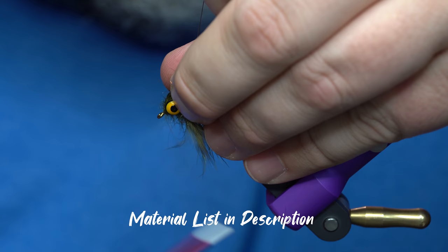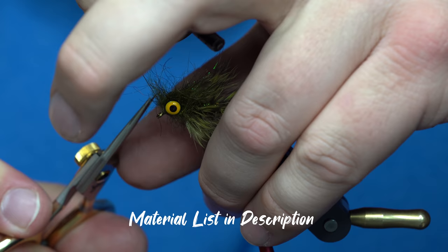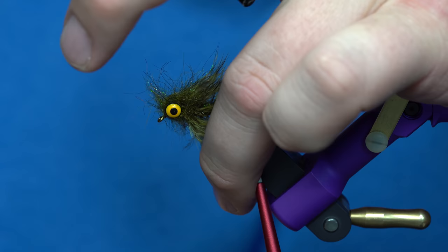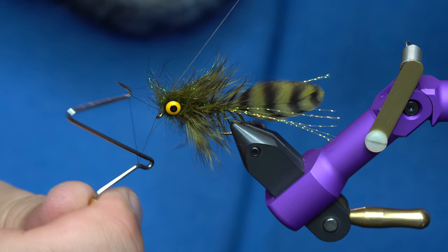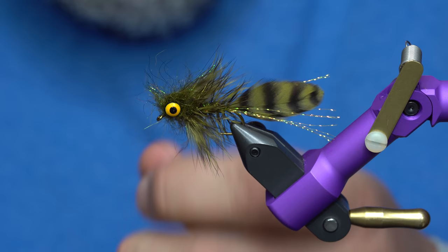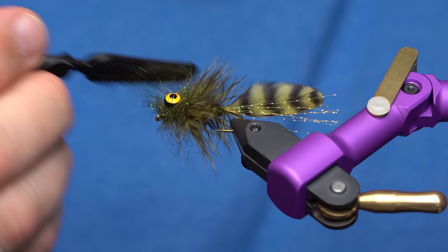You got to be careful your thread will slide right off the front of the eye and unravel everything. That's why I keep this finger here to hold my thread out of the way as I trim it off. Now that I have tension back on my thread I'll just hurry and whip finish and then take a little bit of velcro and pick out that head.